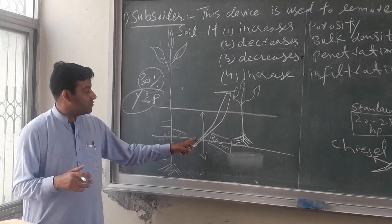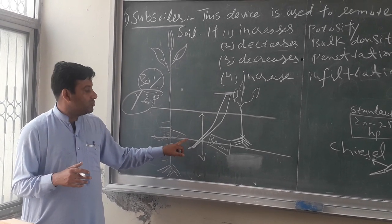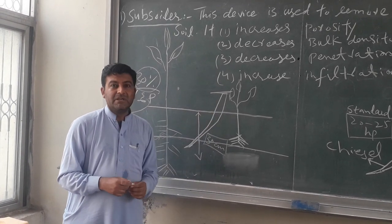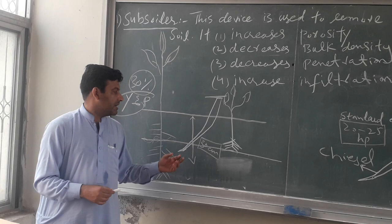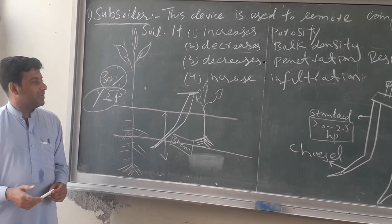This hard layer needs to be removed. We have to use the subsoiler to break this compacted layer, and then the roots will be able to penetrate the soil easily.